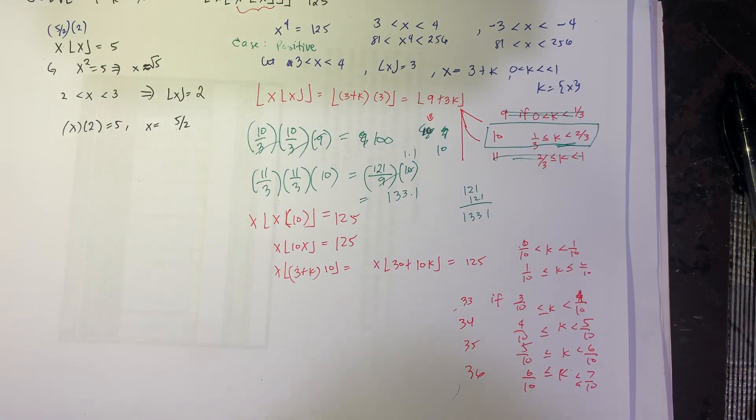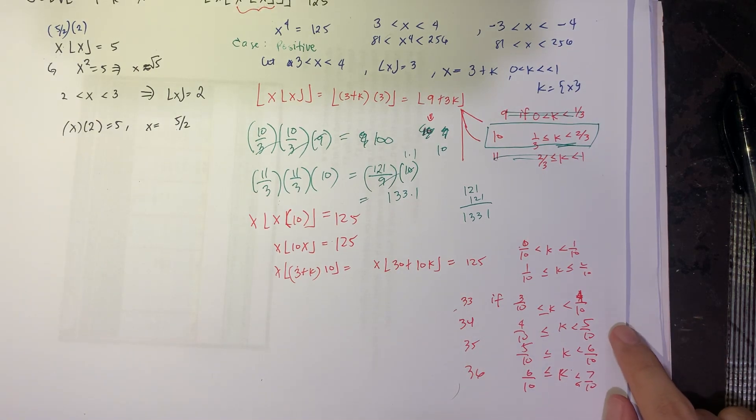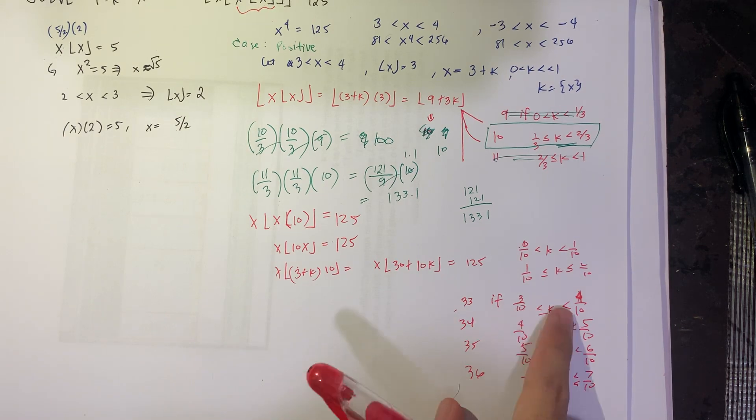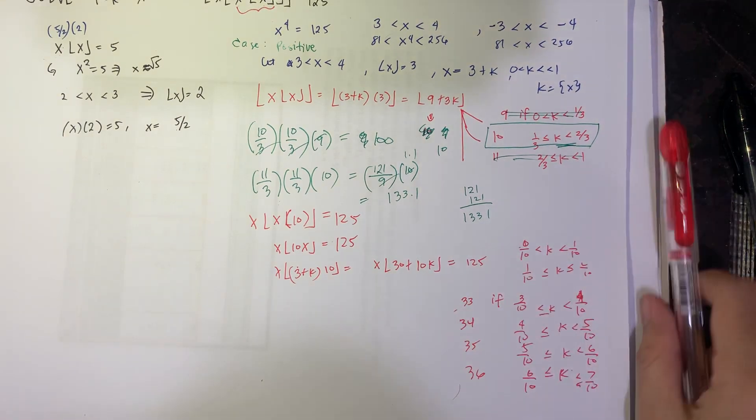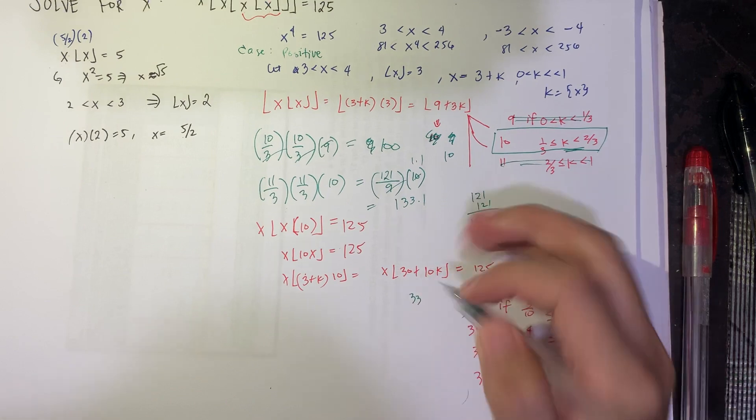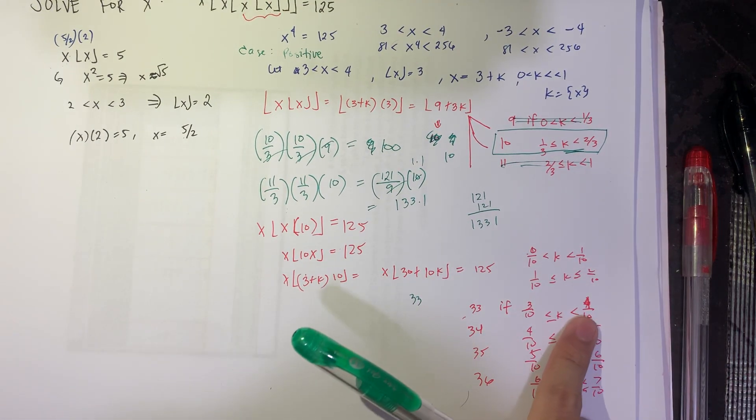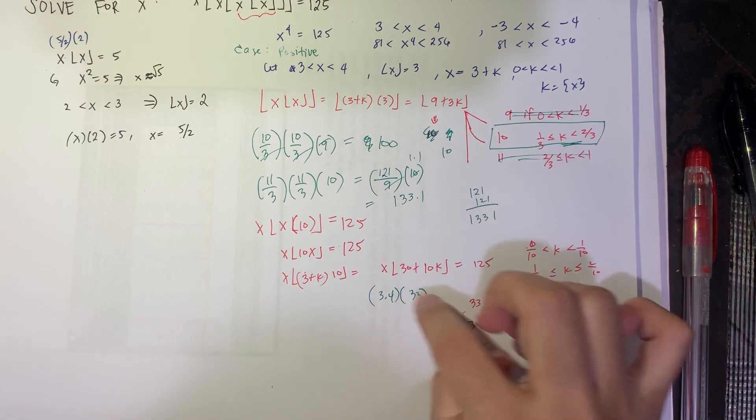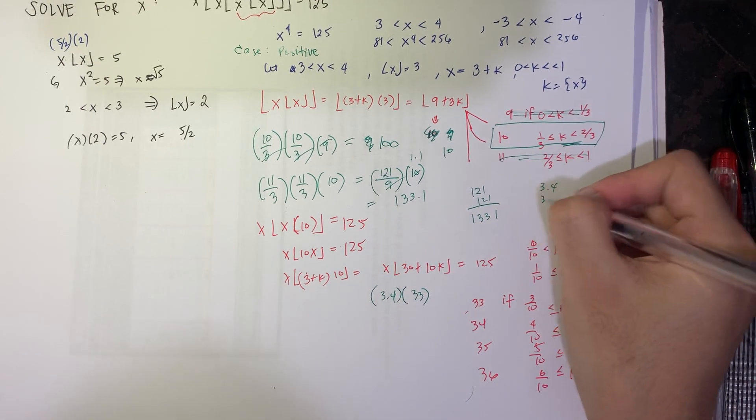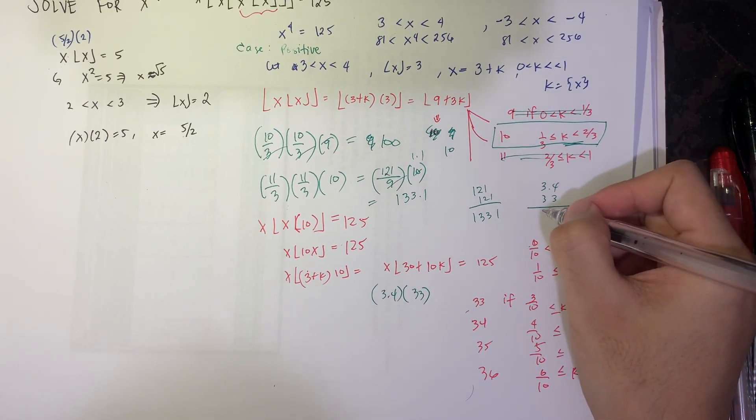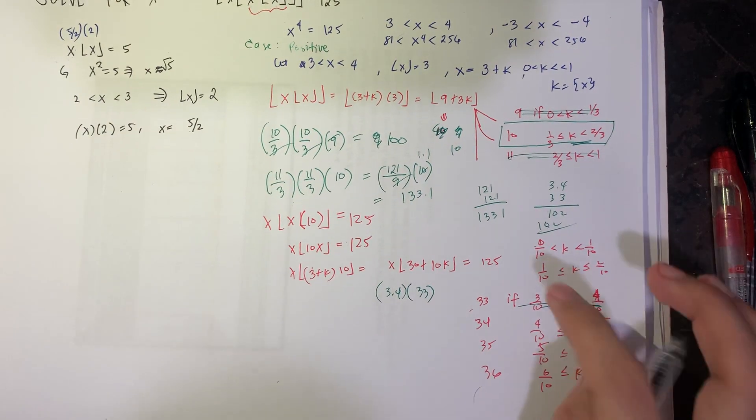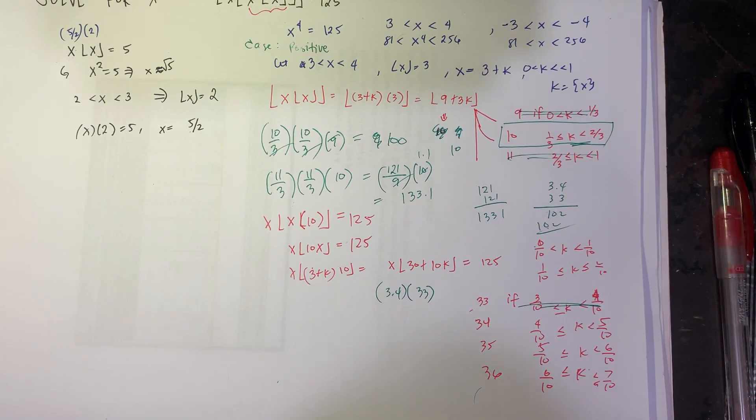So what happens now is we check which is which. For example, if k is between 3 over 10, this case, this is 33. And then your x is at most 3.4. So 3.4 times 33, that's gonna give you roughly just 112. So this one is not a case. This gives you only 112. So that's not a value.